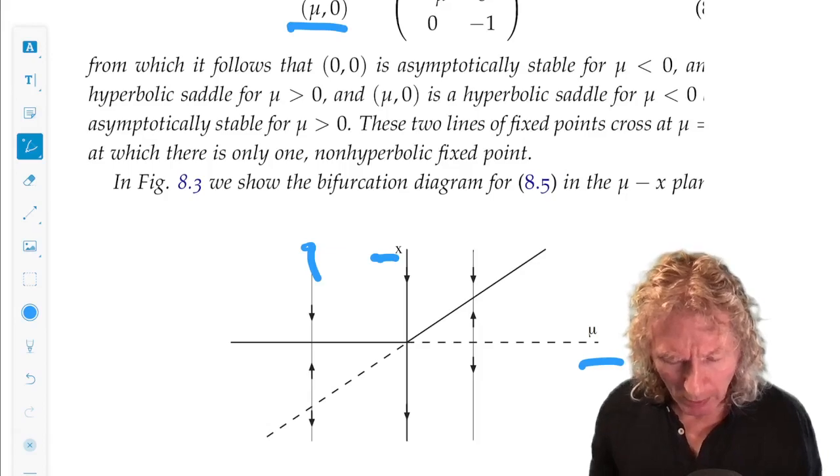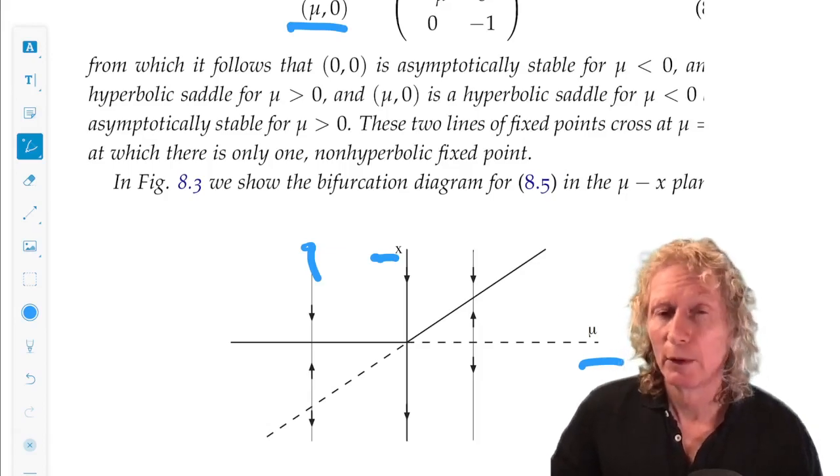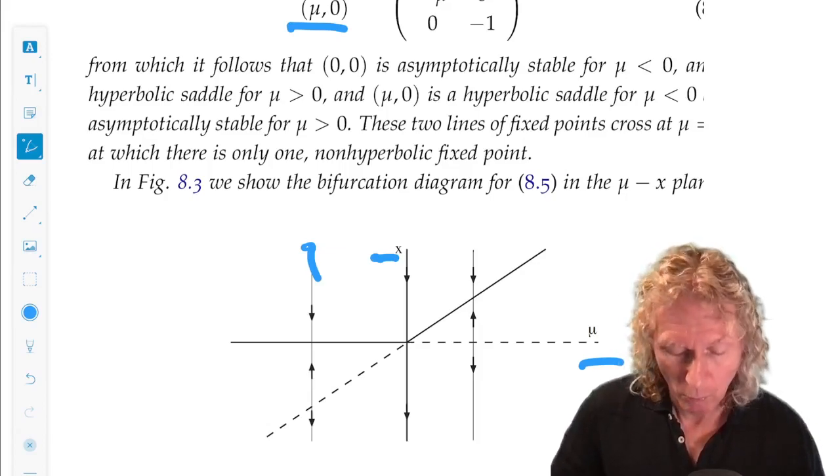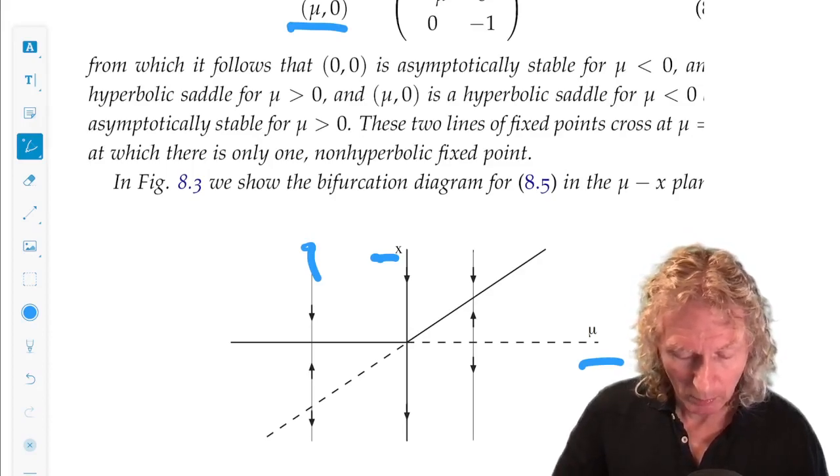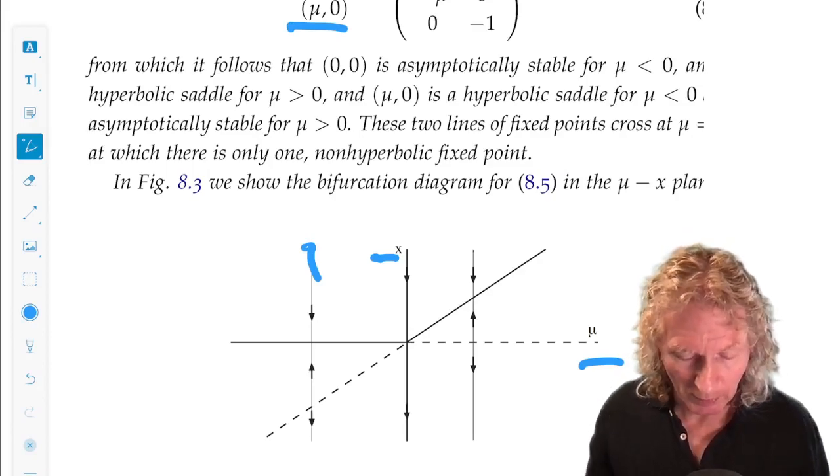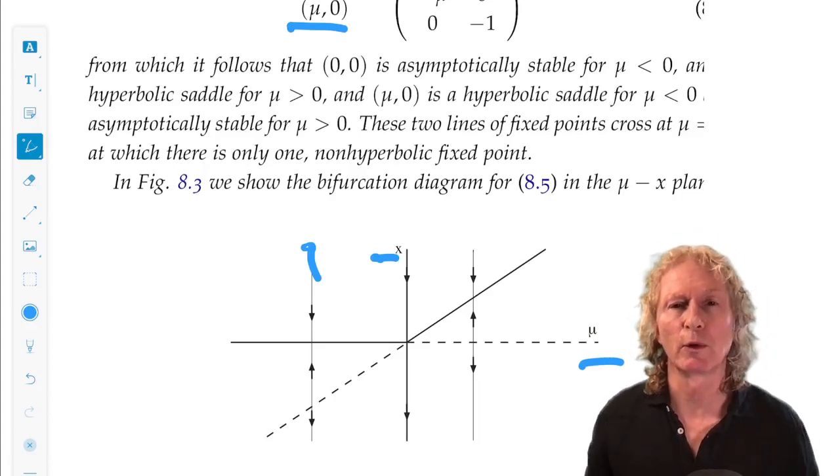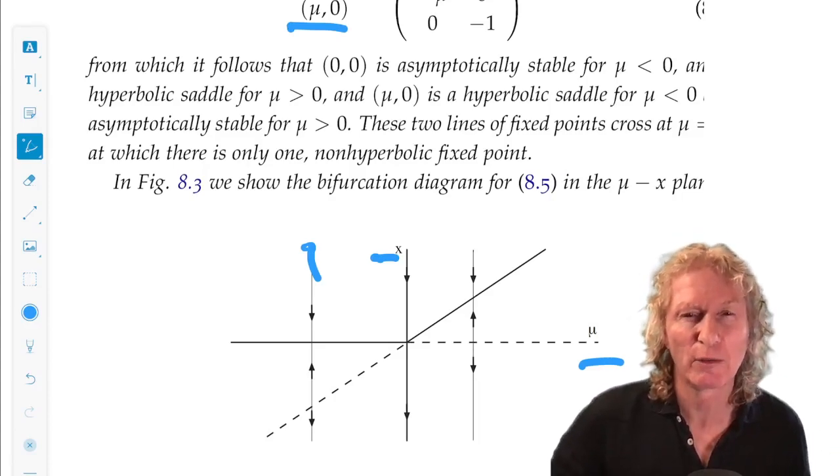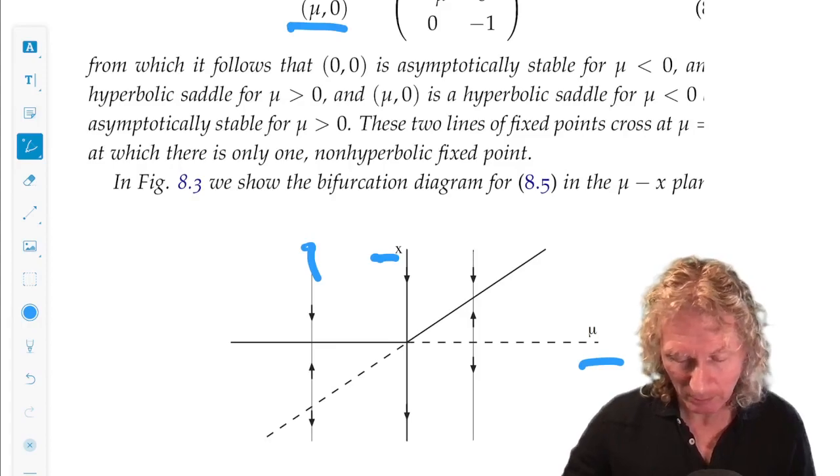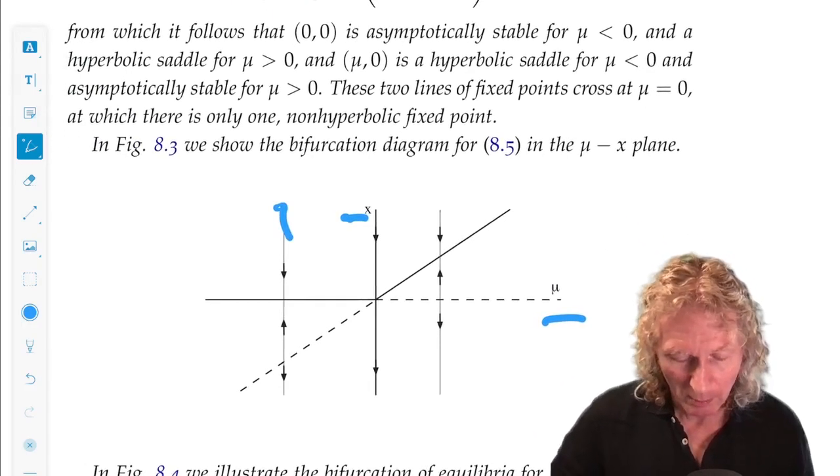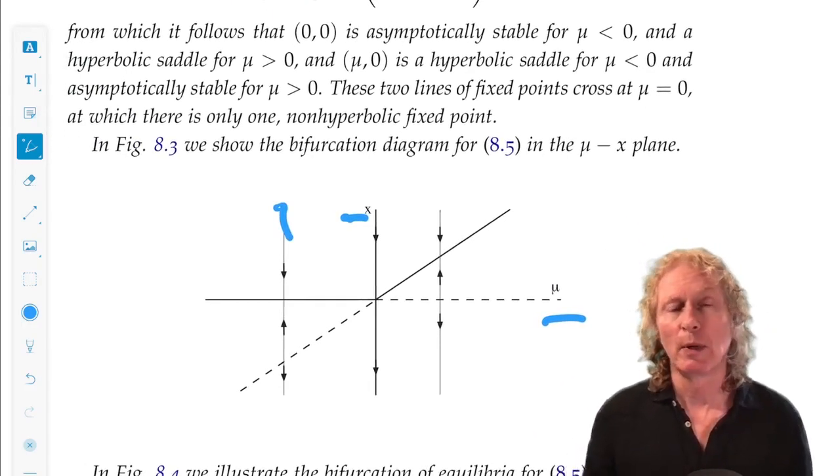And for mu positive, you have two equilibrium. One stable, the other unstable. Sometimes this transcritical bifurcation is referred to as an exchange of stability, and you can see what it means from this bifurcation diagram. But now, compare with saddle node.